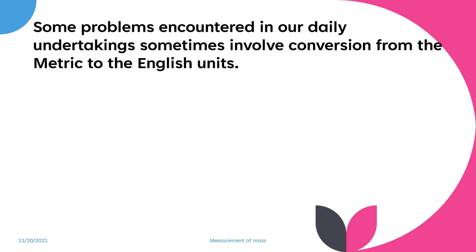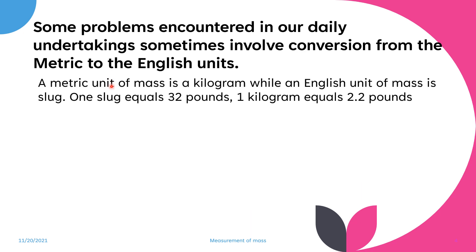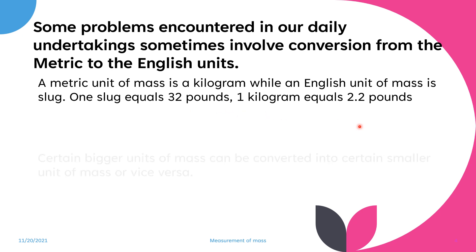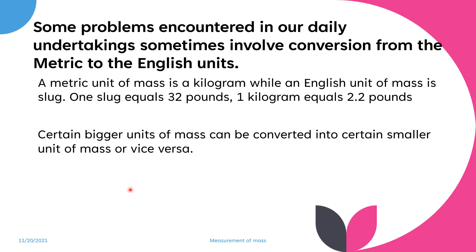Some problems in our daily life involve conversion from metric to English units. The metric unit of mass is the kilogram, while the English unit of mass is the slug. 1 slug equals 32 pounds, and 1 kilogram equals 2.2 pounds. Certain bigger units of mass can be converted into smaller units, or vice versa.